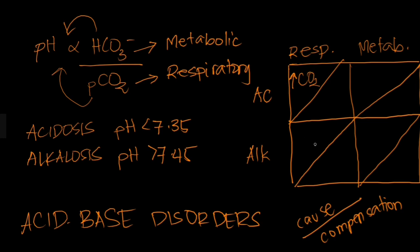Next, respiratory alkalosis. This is alkalosis, so the pH is increased. This is respiratory, so the shift in pH would be due to a shift in your carbon dioxide level. For the pH to increase or become alkalotic, the CO2 level has to decrease. Remember, pH and PCO2 are inversely proportional.